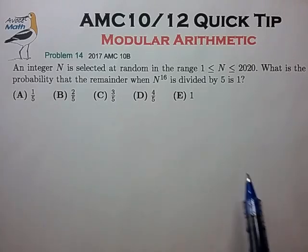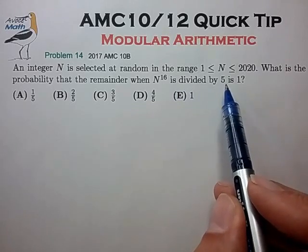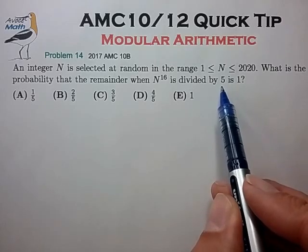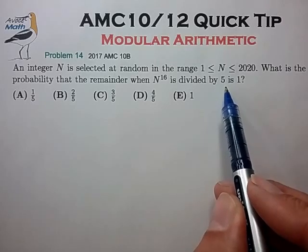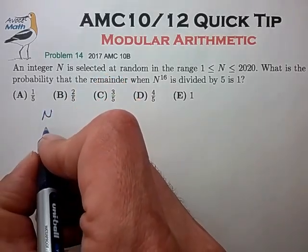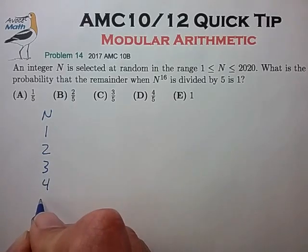Now in our problem, we're dealing with remainders upon division by 5. So it seems like analyzing this problem in mod 5 is the way to go. Because in mod 5, there really are only 5 different types of numbers. In mod 5, the 5 possible numbers are 1, 2, 3, 4, and 0.